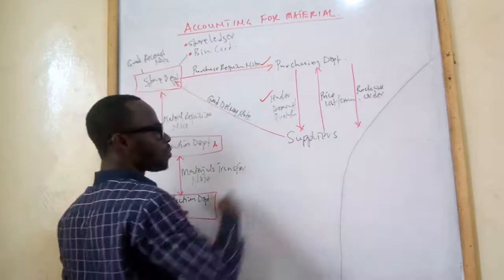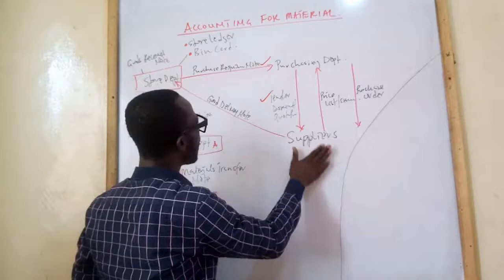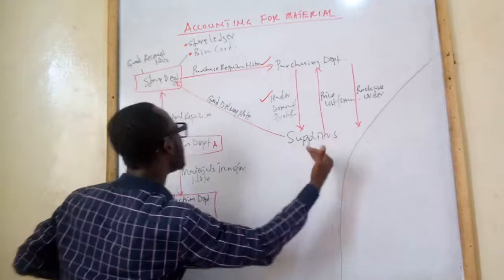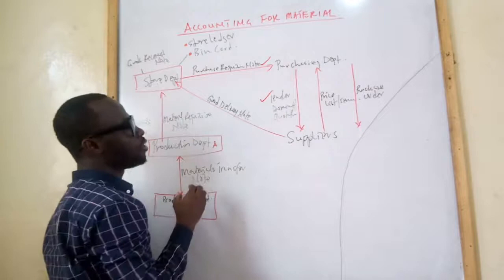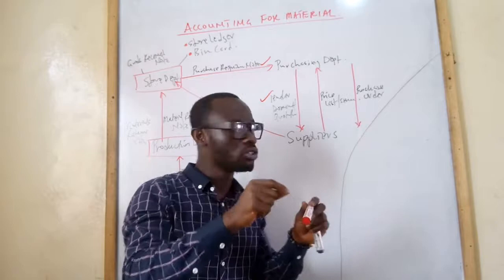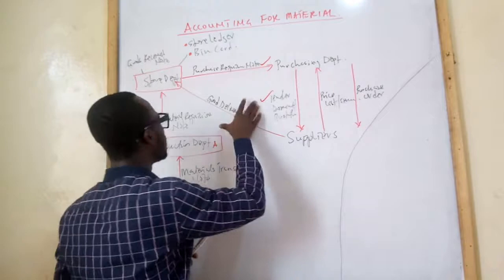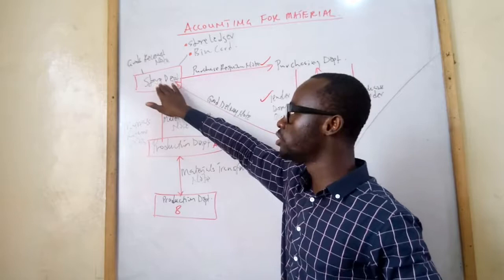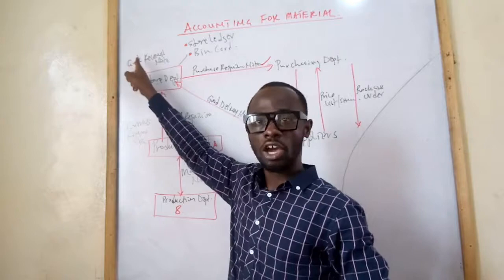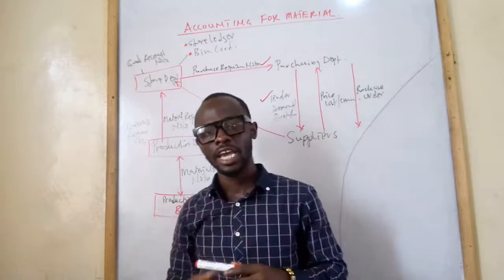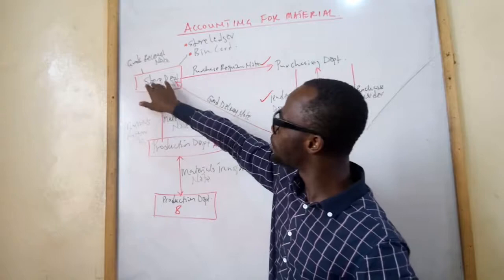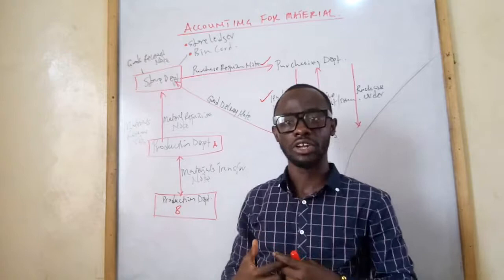Once the supplier receives the purchase order, they process and send the goods straight to the store department. Attached to the goods is the goods delivery note, which records all details about the products — quantity, specification and every description. It is sent by the supplier to the storekeeper. The storekeeper then prepares a goods received note to record the quantity of goods actually received, so it can be compared with the purchase order to verify all ordered items were received.